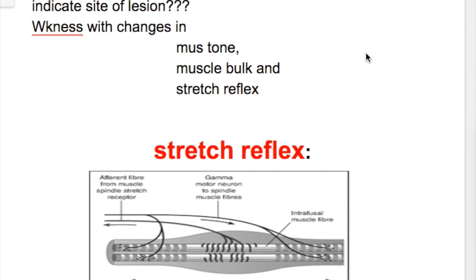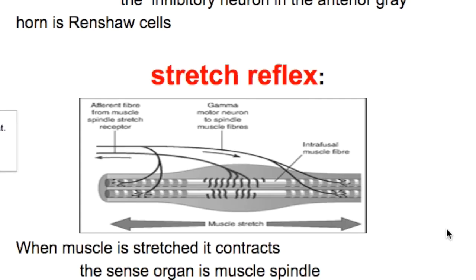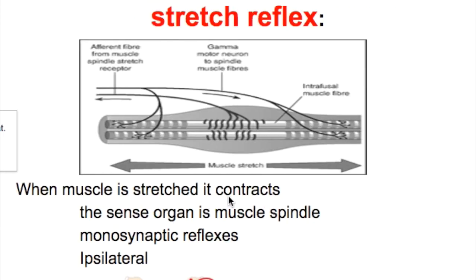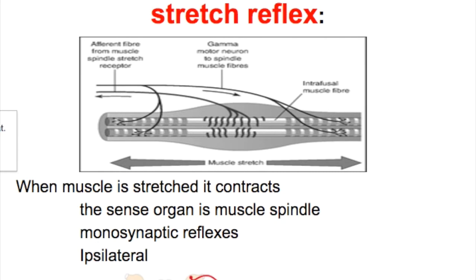The changes that occur in upper motor neuron lesions are weakness with changes in muscle tone, muscle bulk, and stretch reflex. The stretch reflex: when the muscle is stretched or a tendon is tapped, it contracts. The sense organ is the muscle spindle. It is a monosynaptic reflex — the impulse directly innervates the motor neuron to cause muscle contraction. There is no interneuron in between, and the reflex is ipsilateral.